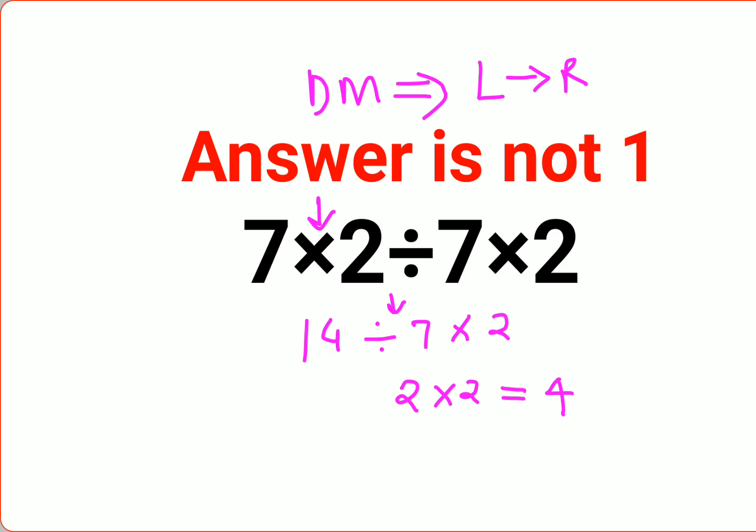So now you might be wondering, then when will the answer be one? The answer should be one when it was given something like this: seven times two divided by, and this seven times two was given in brackets. So you would have gotten this as what? First according to BODMAS and PEMDAS, we'll keep everything as it is and the first thing what we do is we do the brackets.